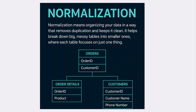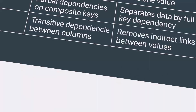Normalization means organizing your data in a way that removes duplication and keeps it clean. It helps break down big, messy tables into smaller ones, where each table focuses on just one thing. This makes the database easier to update and helps avoid mistakes like storing the same info in multiple places.